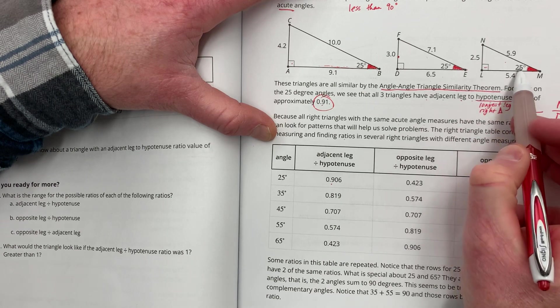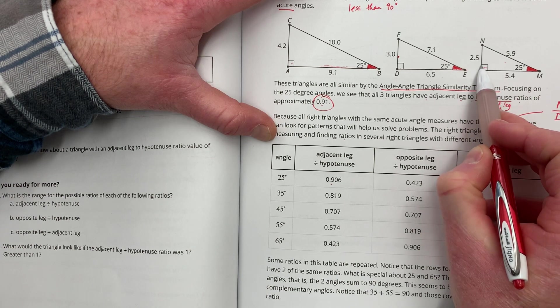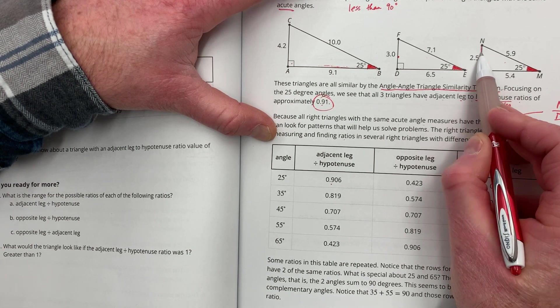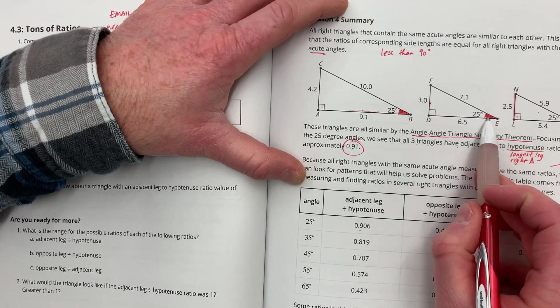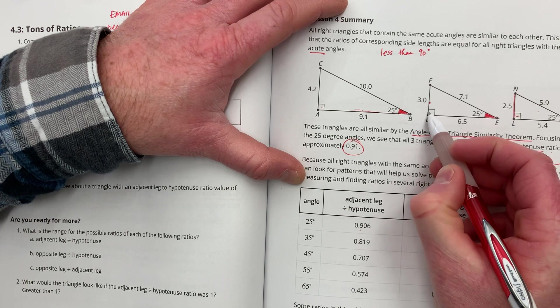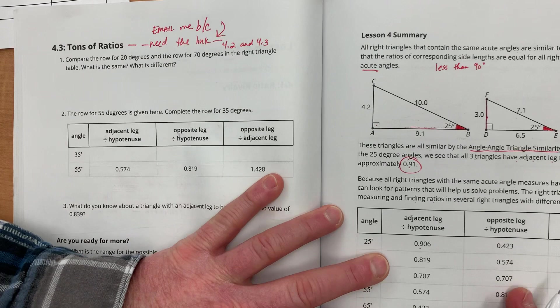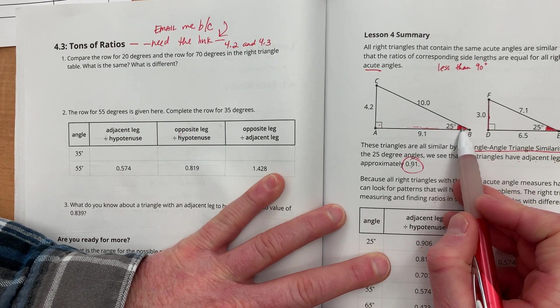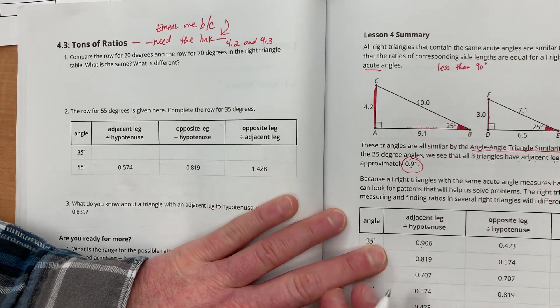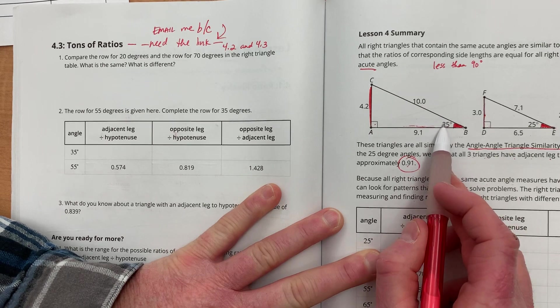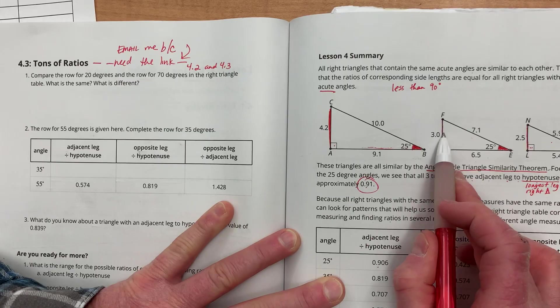This is the, from the perspective of the 25 degree angle, this is the opposite leg. From the perspective of this 25 degree angle, this is the opposite leg. And from the perspective of this 25 degree angle, this is the opposite leg. It's all the way across the way, that's the opposite leg.